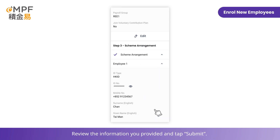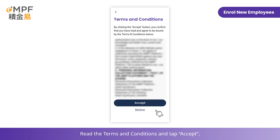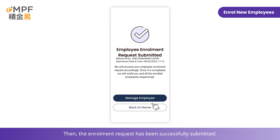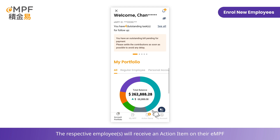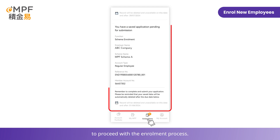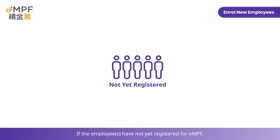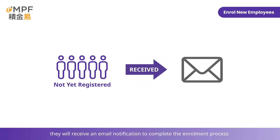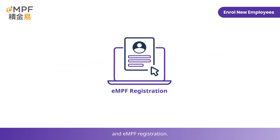Review the information you provided and tap 'Submit'. Read the terms and conditions and tap 'Accept'. The enrollment request has been successfully submitted. The respective employees will receive an action item on their MPF to proceed with the enrollment process.